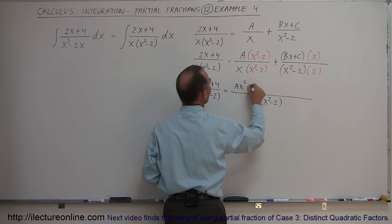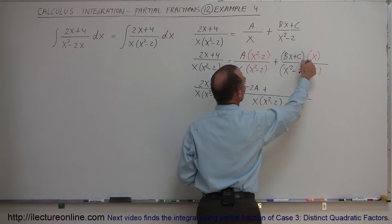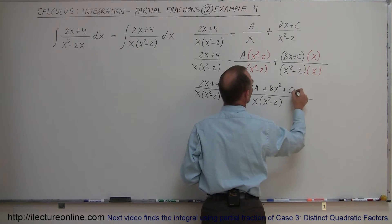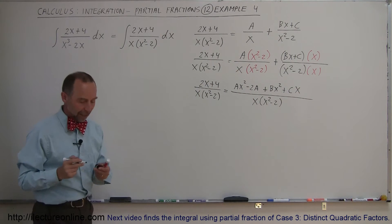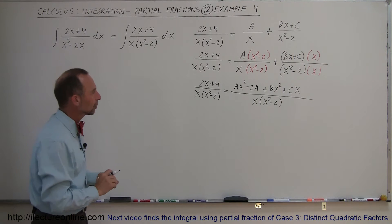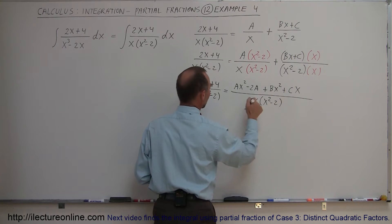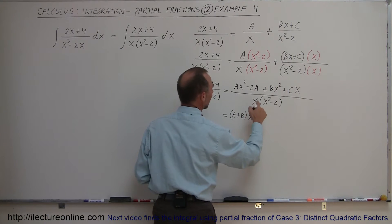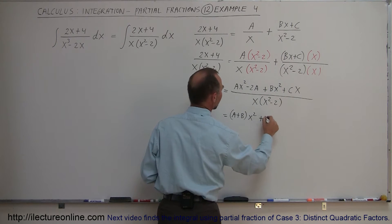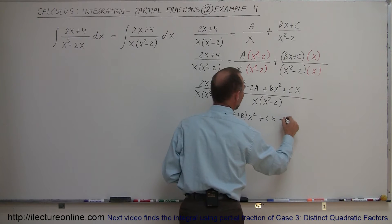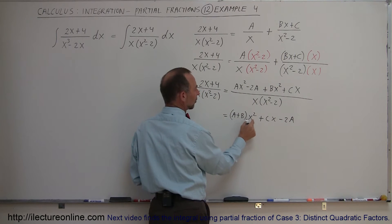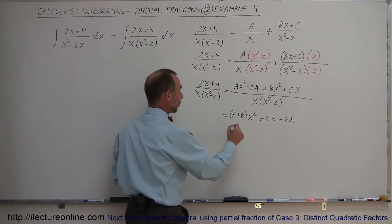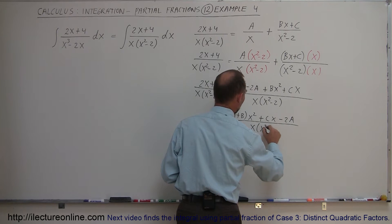Multiplying out the numerator gives us ax squared minus 2a plus bx squared plus cx. Combining like terms: the x squared terms give a plus b times x squared, the x term gives cx, and the constant term is minus 2a. So the numerator is a plus b times x squared, plus cx, minus 2a, all over the common denominator x times x squared minus 2.